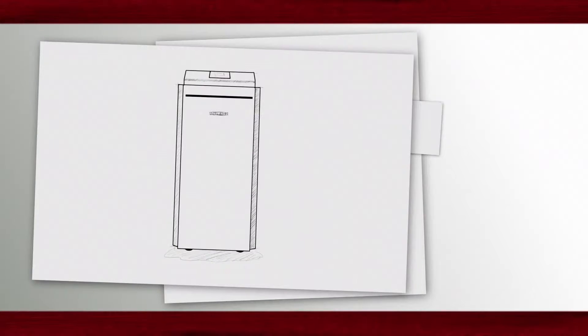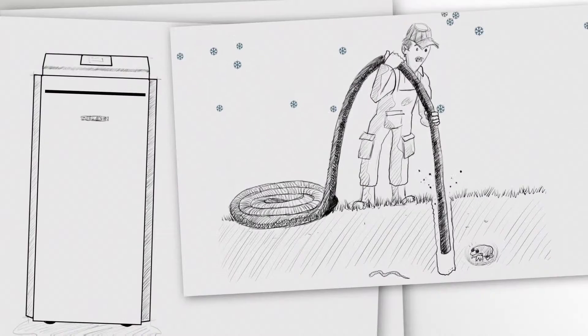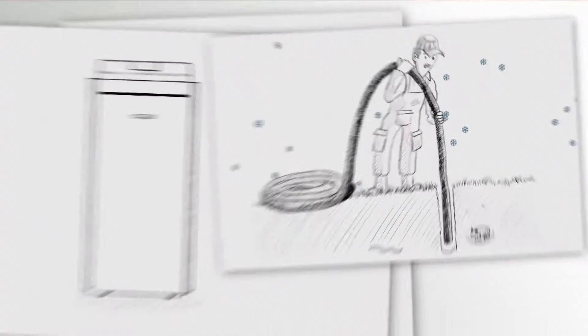In order to use the heat in the ground you need a brine to water heat pump. These are also called ground source heat pumps in the UK. Even when it's freezing outside, a constant temperature is held deep in the ground.